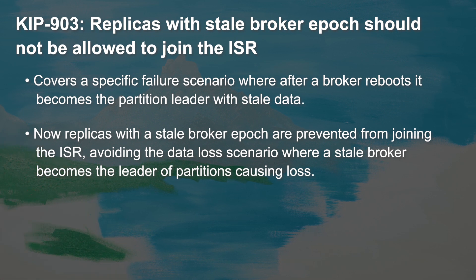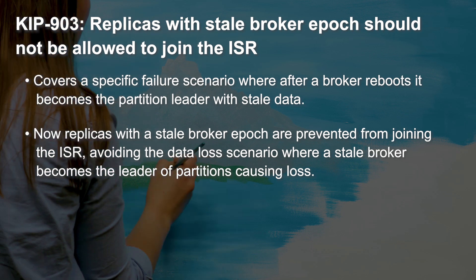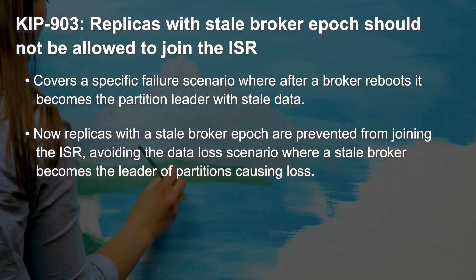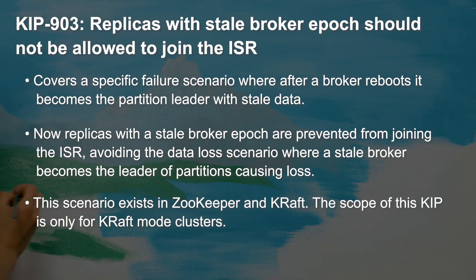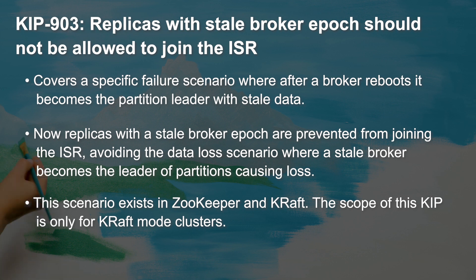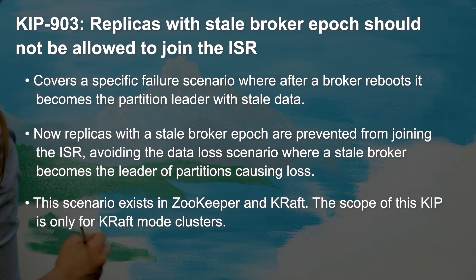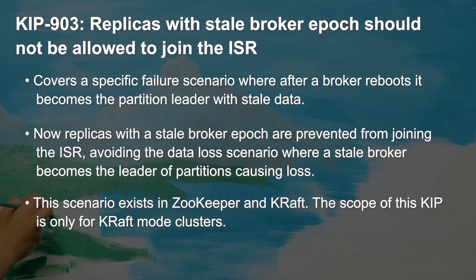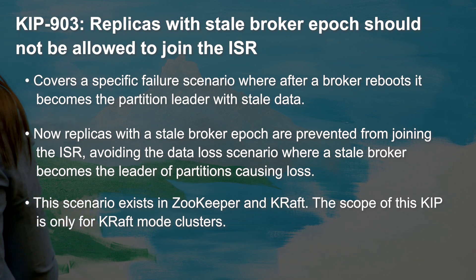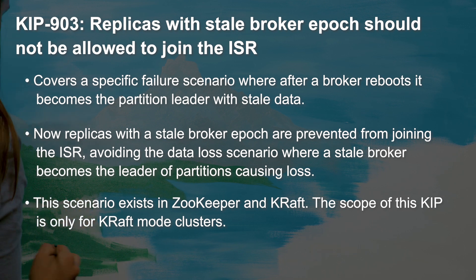But what if a leader of one of the partitions crashes at the same time? Then the rebooting broker could be marked as a partition leader, making the data loss a very real concern. KIP 903 eliminates this issue by ensuring that replicas with a stale broker epoch won't be able to join the ISR list. Keep in mind that since ZooKeeper mode will be removed in Apache Kafka 4.0, the scope of KIP 903 is only for KRaft mode clusters.